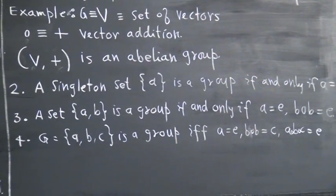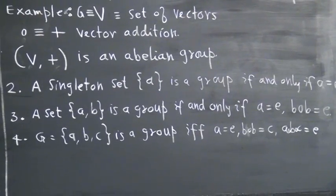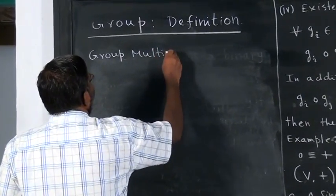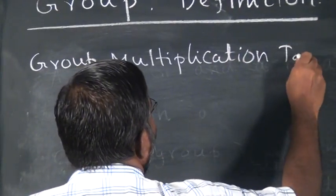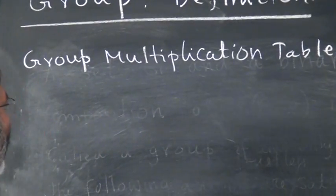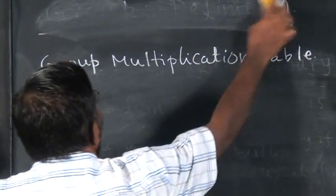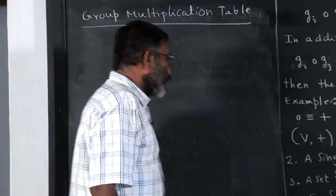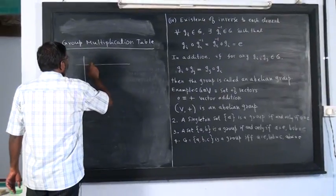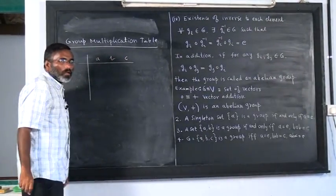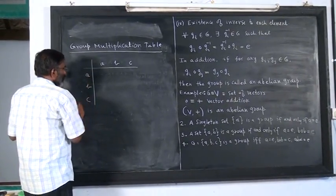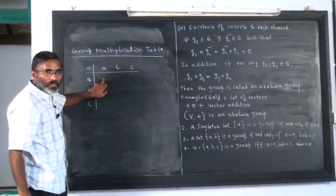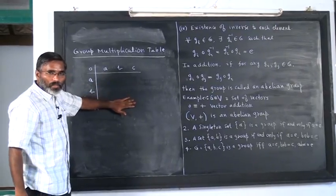Let me introduce another concept which will become clear to understand this: the group multiplication table. What you have to do here is write in this row the elements of the group, and in this column the same elements. Here you have the composition rule — what is A composed A, A composed B, A composed C — and you fill this table. This is called the multiplication table.